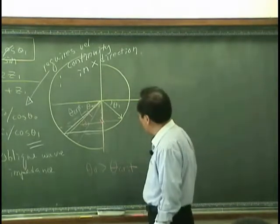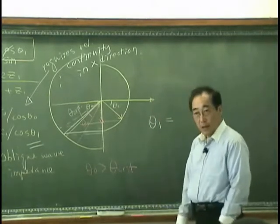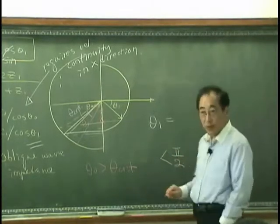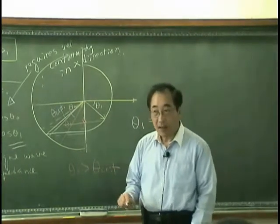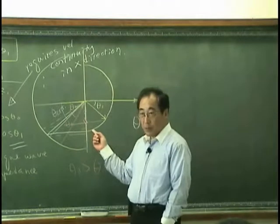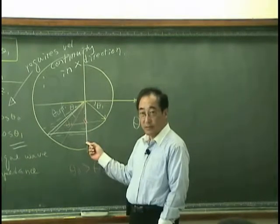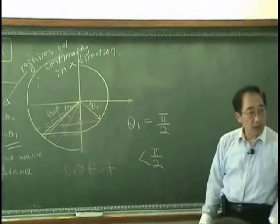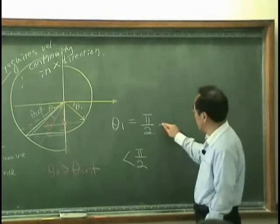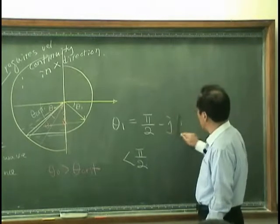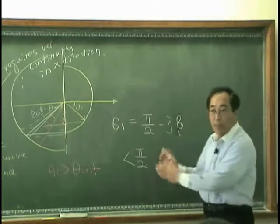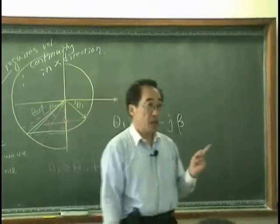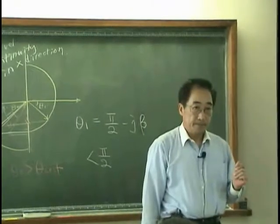And we could say theta 1 is obviously should be less than pi over 2, always, right? But it is not possible to get this angle, right? So I could write there is some imaginary angle. But in some sense that is smaller than pi over 2. That's why I put the minus instead of plus.